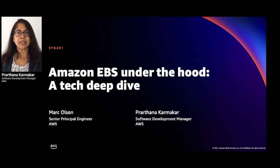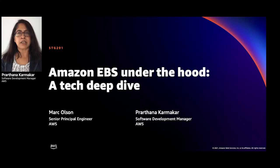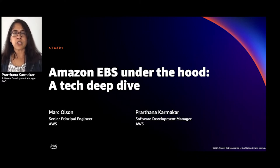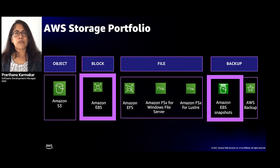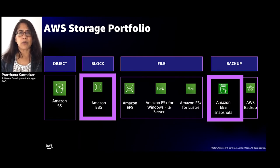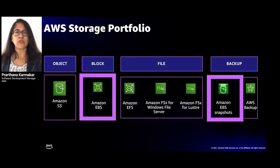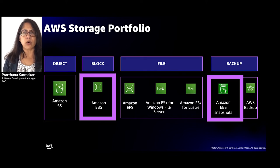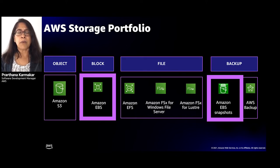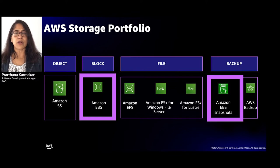Before we get started, let's take a look at where EBS fits into the AWS storage portfolio. AWS offers three main types of storage: object, block, and file, and we also offer a range of options for backup storage. These solutions are designed to provide cloud-scale, low-cost, secure storage, but with different interfaces to meet the needs of your applications.